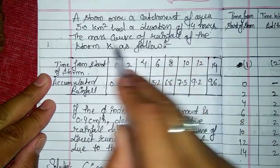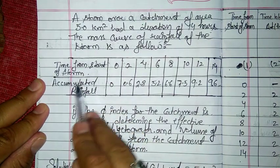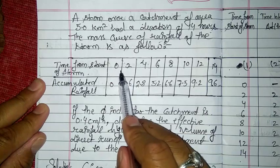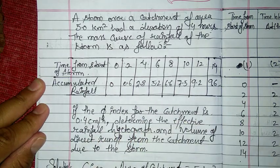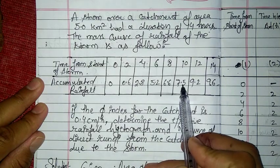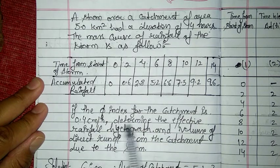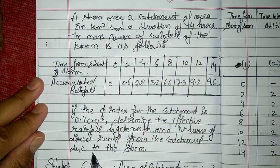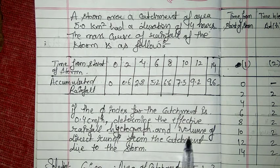We have a problem here: a storm over a catchment area of 5 square kilometers had a duration of 14 hours. The mass curve of the rainfall is given with time from the start of the storm and accumulated rainfall over 2-hour intervals: 0, 0.6, 2.8, 5.2, 6.6, 7.5, 9.2, and 9.6. The phi index for the catchment is 0.4 cm/hr. We need to determine the effective rainfall hyetograph and the volume of direct runoff from the catchment due to the storm.